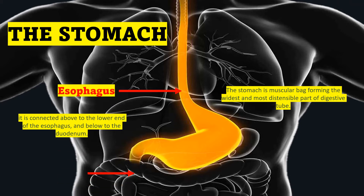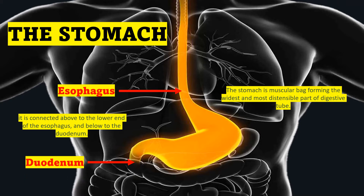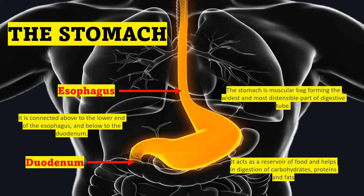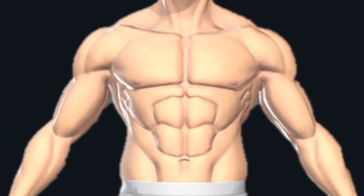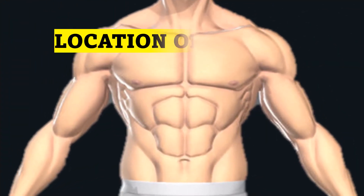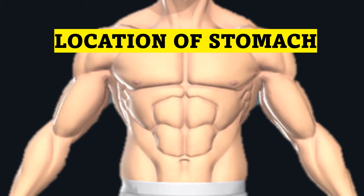It acts as a reservoir of food and helps in digestion of carbohydrates, proteins, and fats. It is the main digestive organ in the body. Next is the location of the stomach.